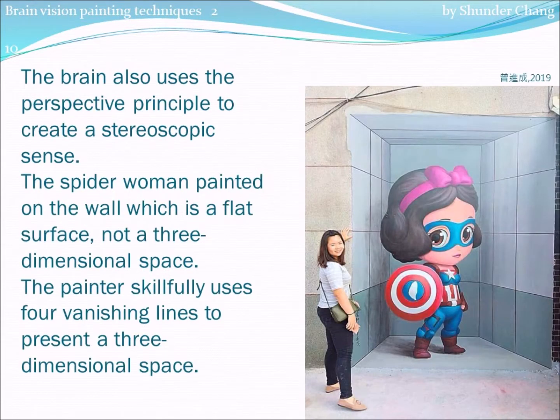The brain also uses the perspective principle to create a stereoscopic sense. The spider woman painted on the wall, which is a flat surface, not a three-dimensional space. The painter skillfully uses four vanishing lines to present a three-dimensional space.